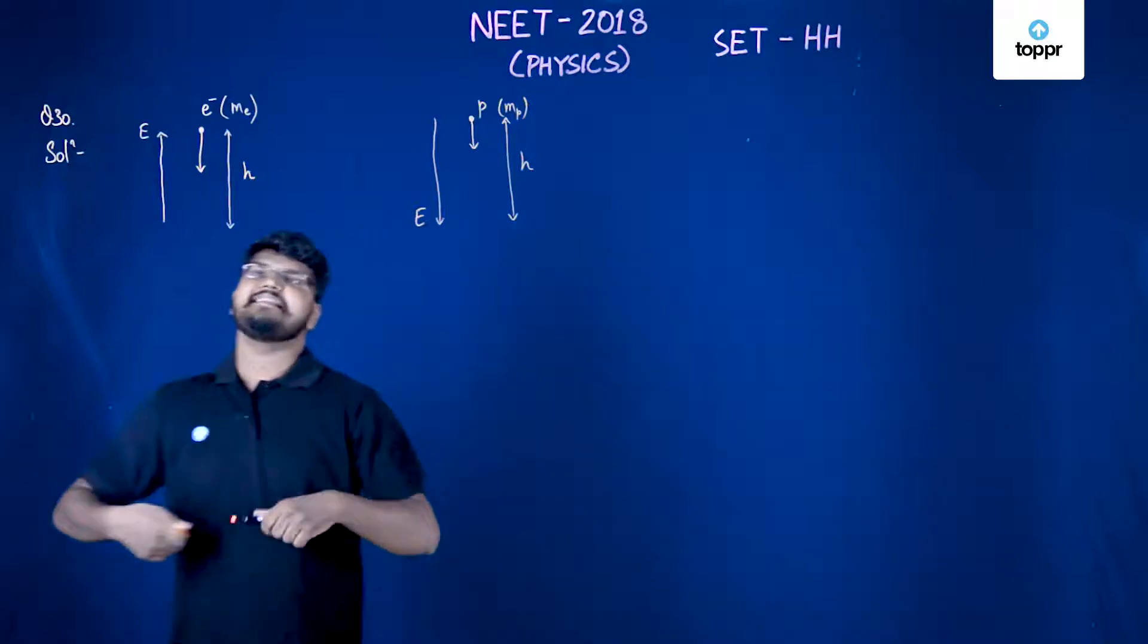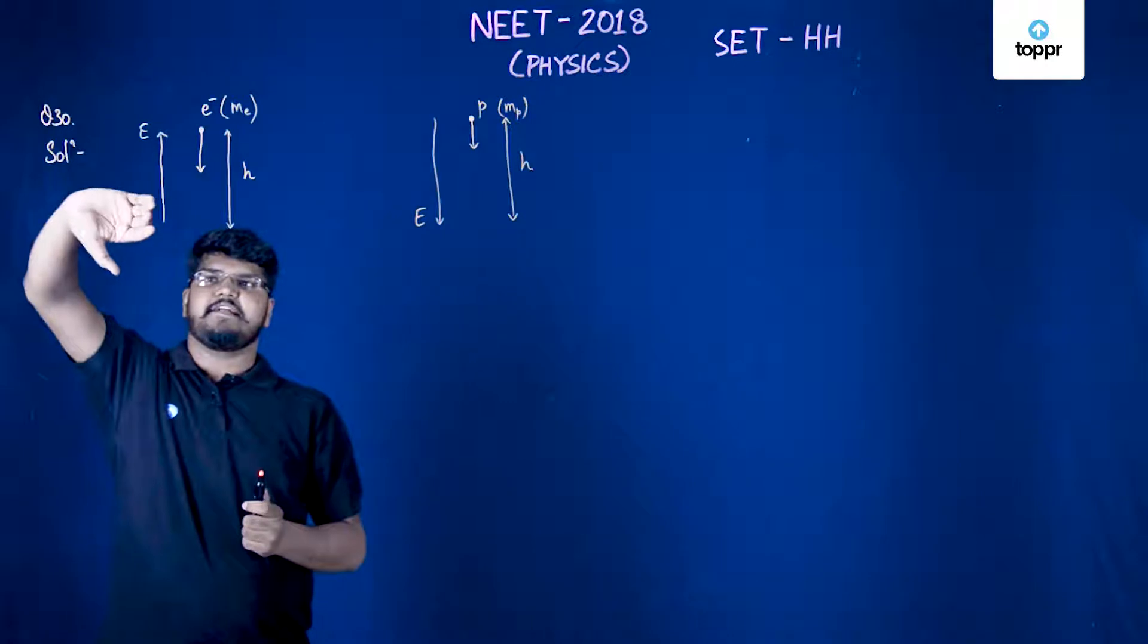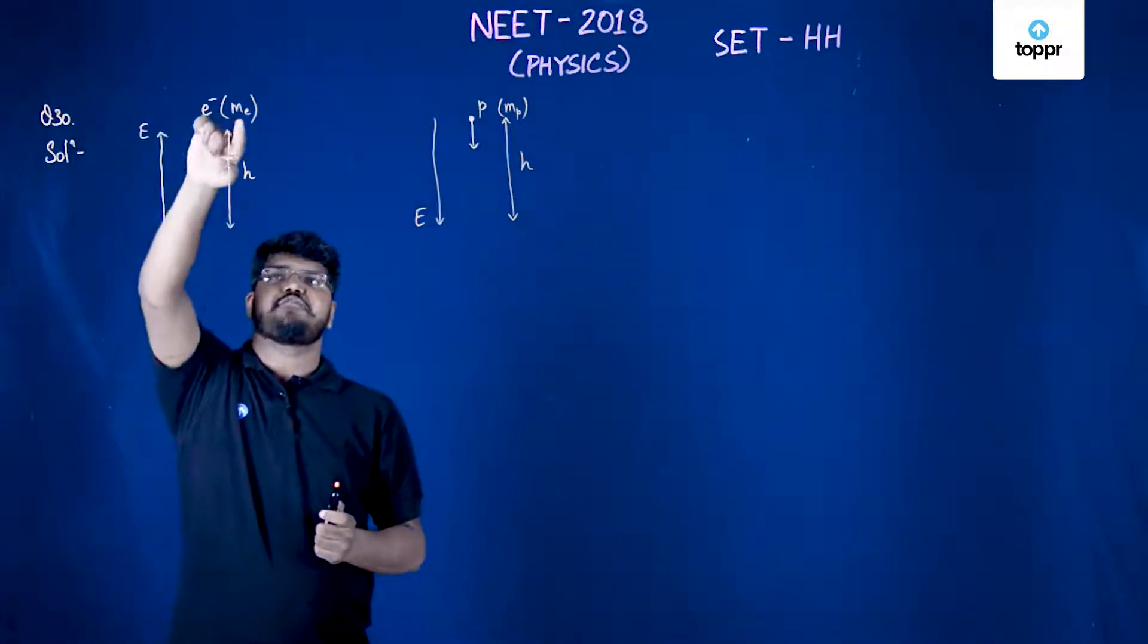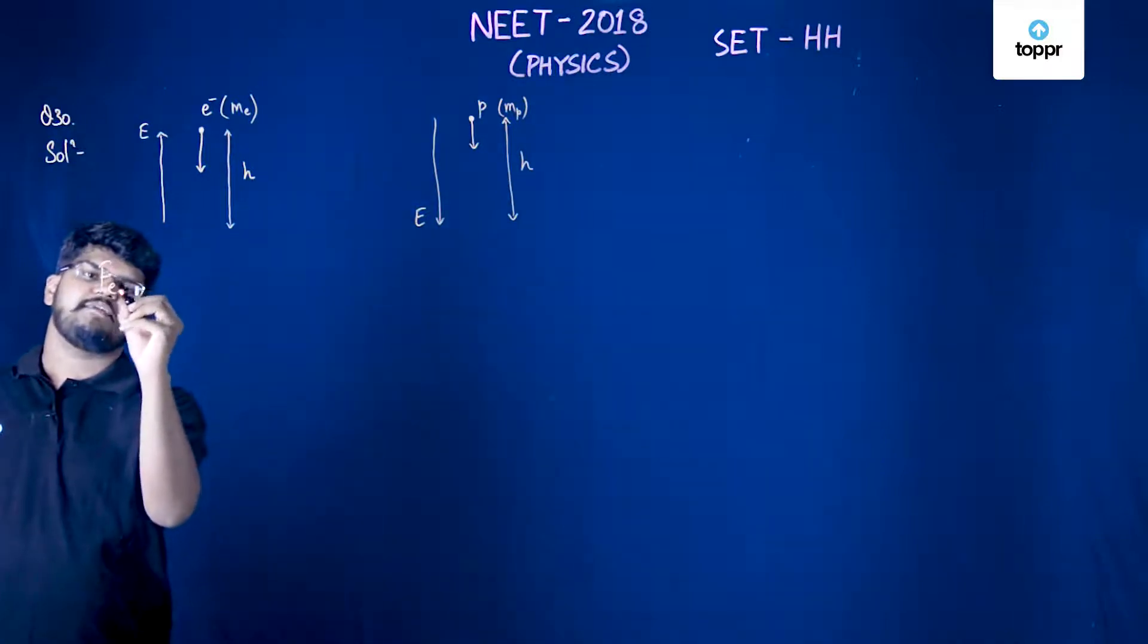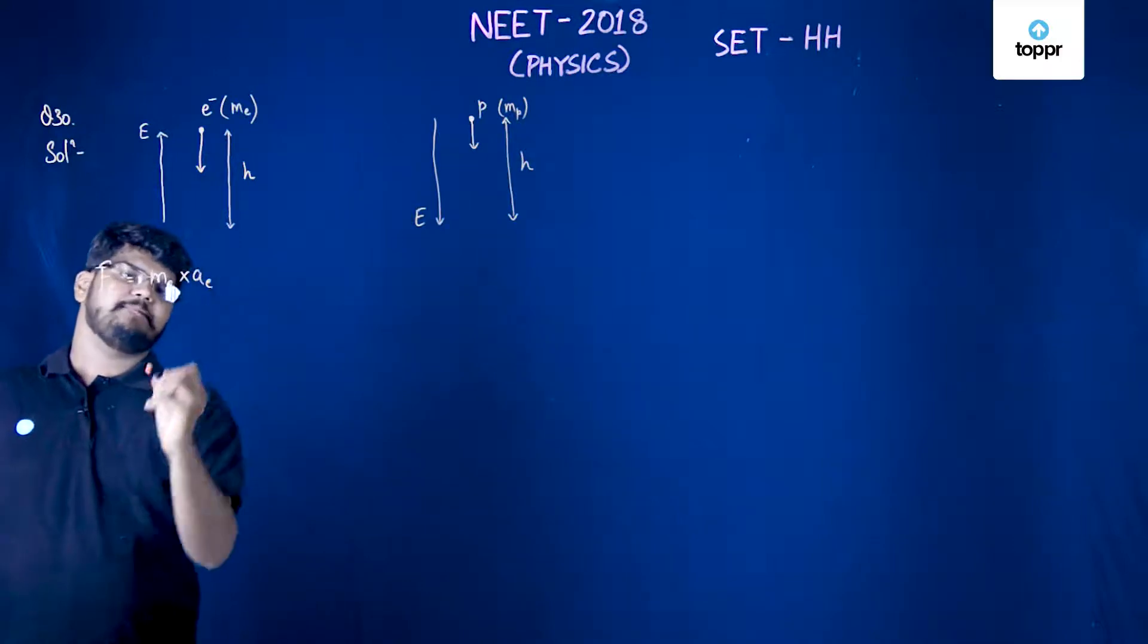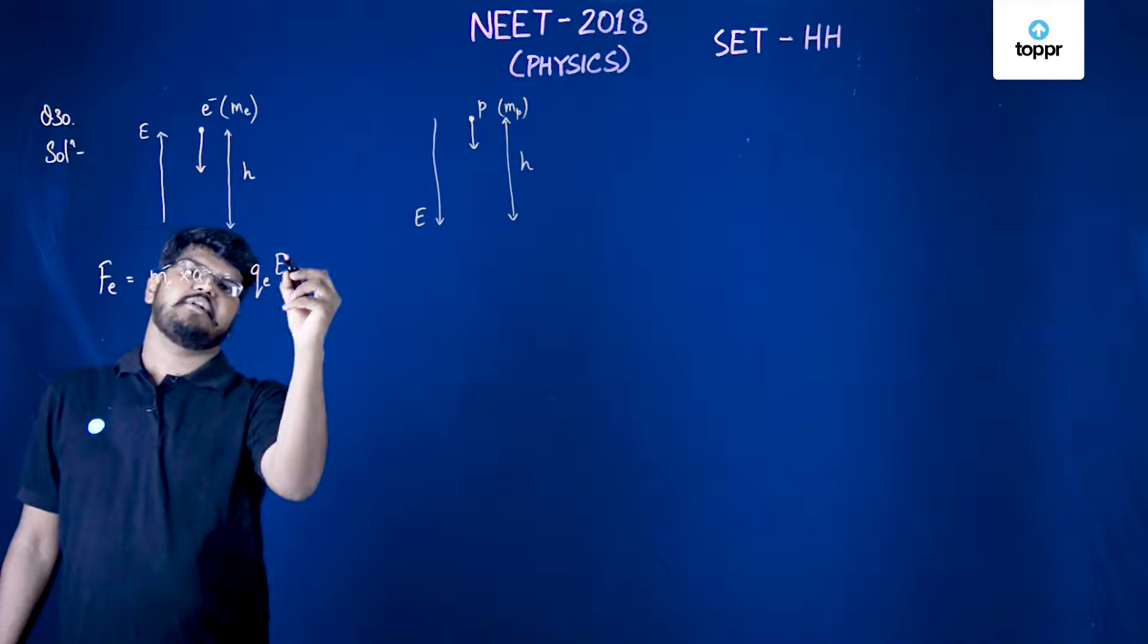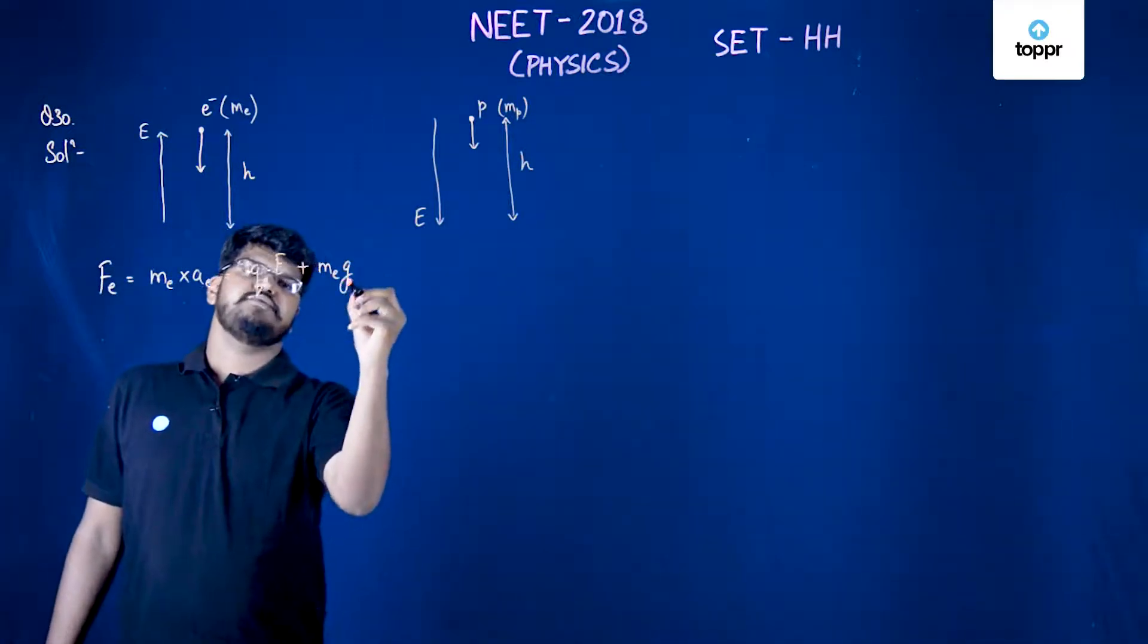The electron is falling through a certain distance and the electric field will be along this direction. The mass of the electron is ME, so we can calculate the force on this electron. FE will be equal to ME into AE, which will be equal to QE (the charge of electron) into E plus ME into G.